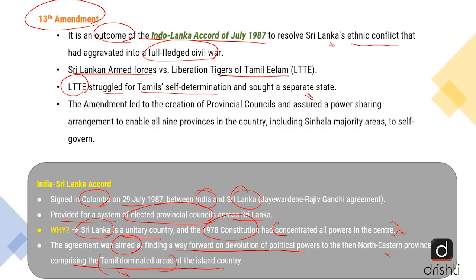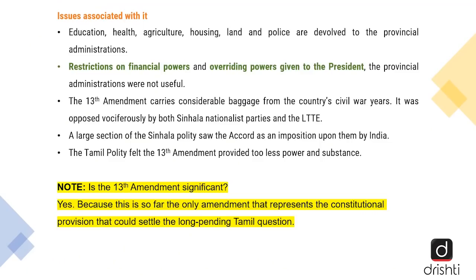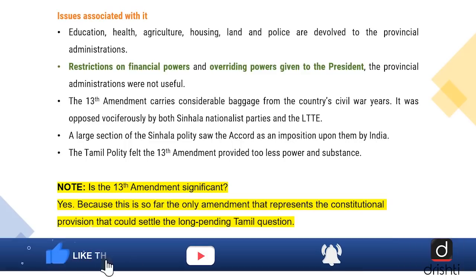Post the civil war, in order to maintain some peace, the 13th Amendment was brought in as part of the outcome of the Indo-Sri Lanka Accord. This amendment led to the creation of provincial councils and assured a power-sharing arrangement to enable all nine provinces in the country, including the Sinhala majority areas, to self-govern. However, there were issues associated with it.